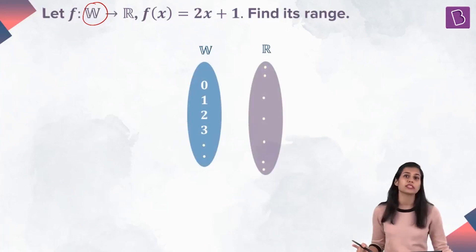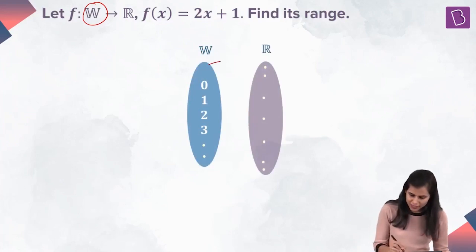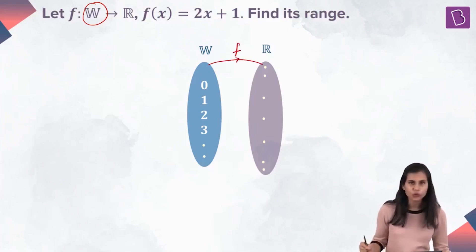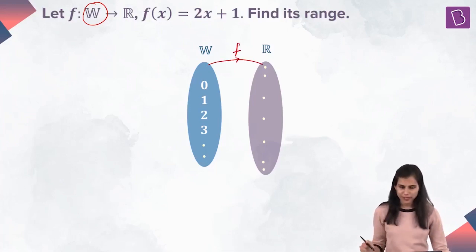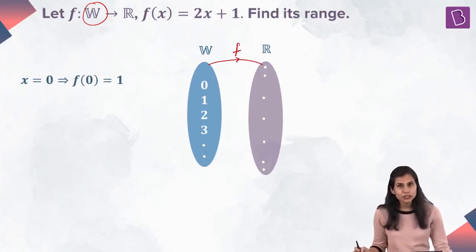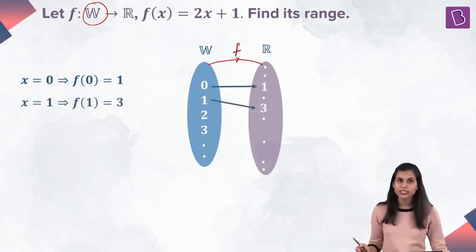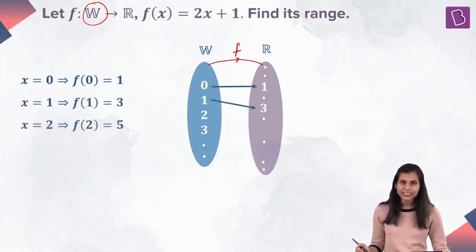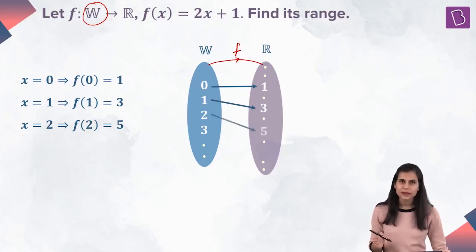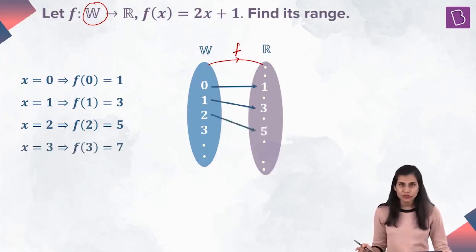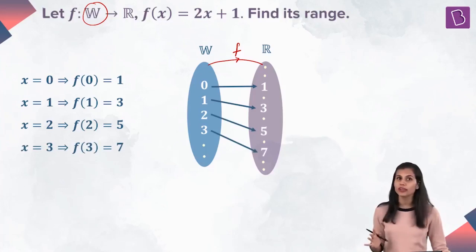This is my co-domain which is the set of all reals. My f is defined from this domain to this co-domain. When x is 0, f(x) = 2×0 + 1, that is 1; so 0 gets mapped to 1. When x is 1, f(x) = 2×1 + 1, that is 3; so 1 gets mapped to 3. When x is 2, f(x) = 2×2 + 1; so 2 gets mapped to 5. When x is 3, f(x) = 2×3 + 1 which is 7; so 3 gets mapped to 7, and so on.